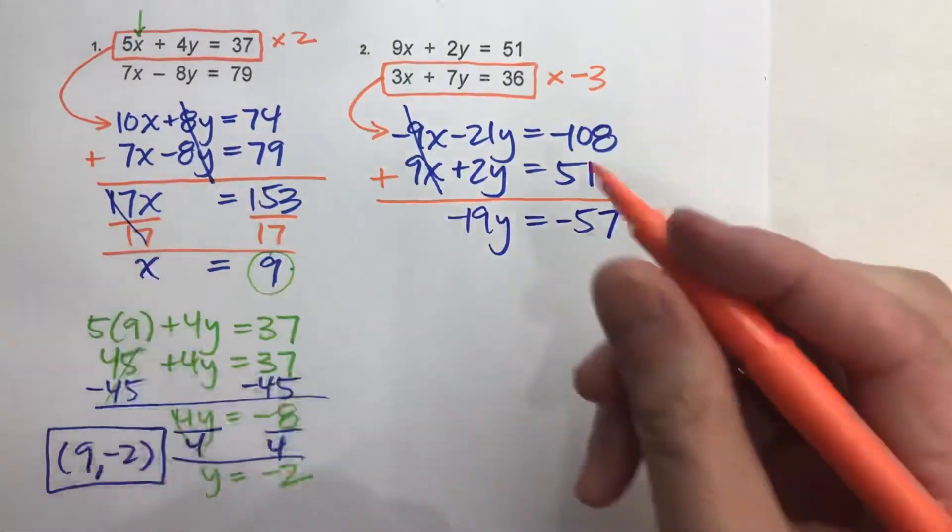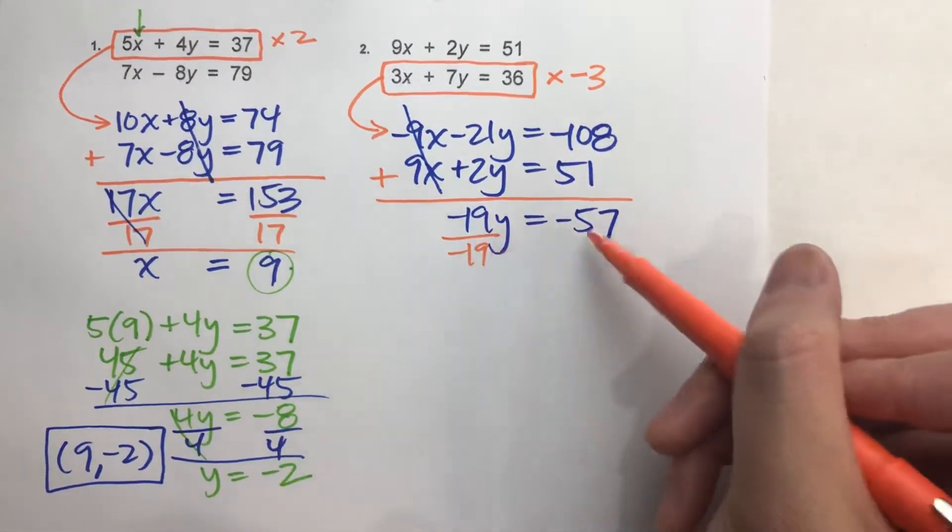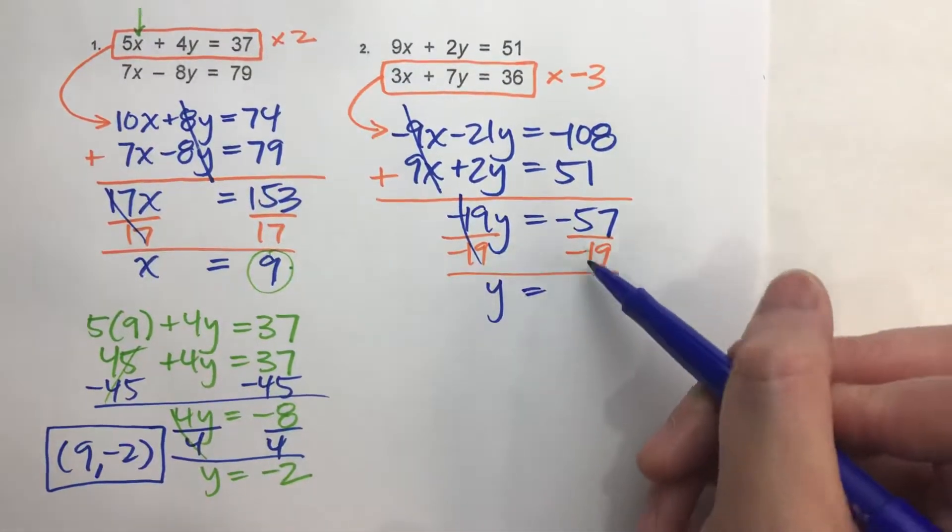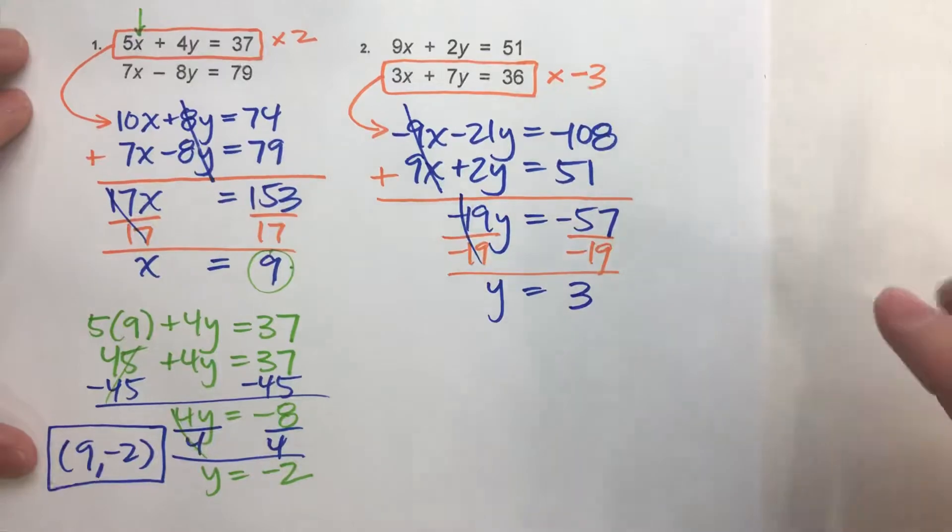To get y, I'll just divide both sides by negative 19. Should be y equals positive 3. So again, that first step is the tricky step.